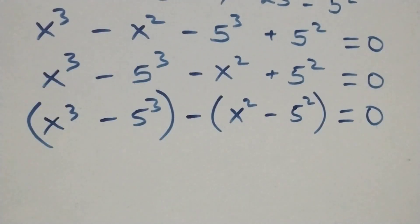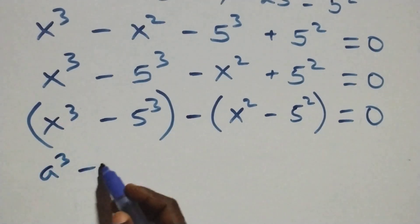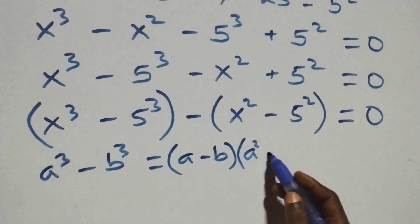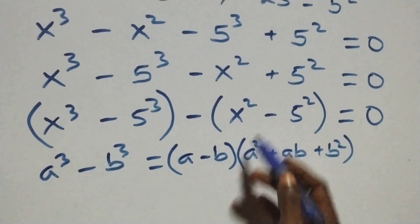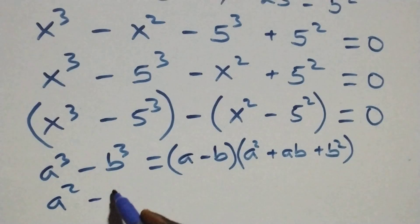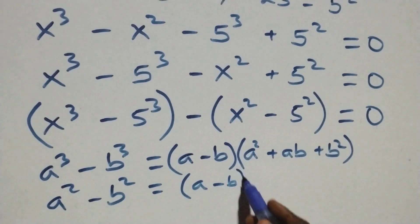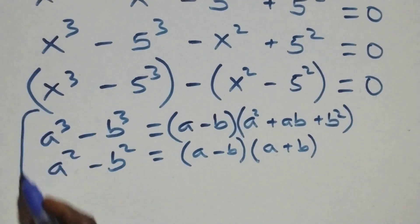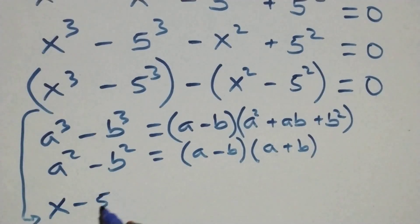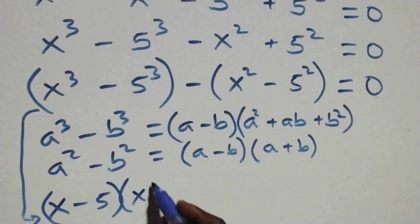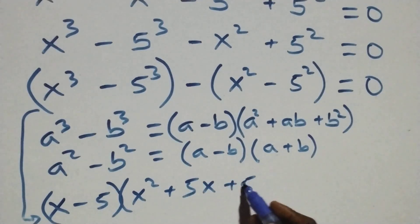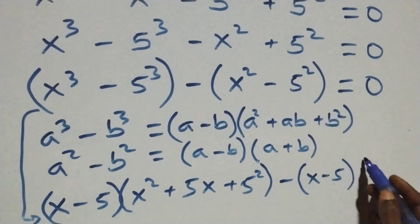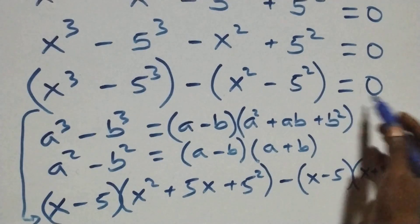The first bracket follows the identity a cubed minus b cubed equals (a minus b)(a squared plus ab plus b squared). The second bracket follows a squared minus b squared equals (a minus b)(a plus b). Applying these, we get (x minus 5)(x squared plus 5x plus 25) minus (x minus 5)(x plus 5) equals zero.